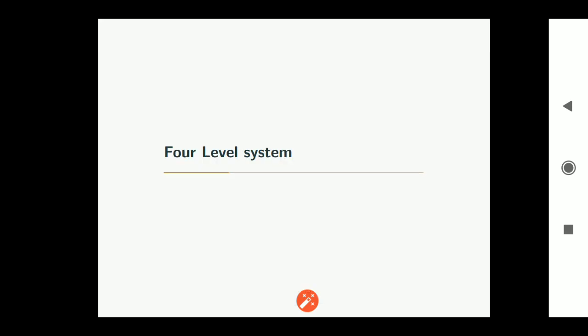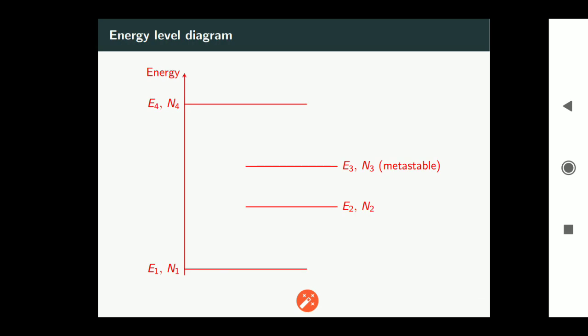Now let us study four level system. This is the energy level diagram of a four level system with energy levels e1, e2, e3, e4 with populations n1, n2, n3, n4. Note that e3 is a metastable state with the population n3.